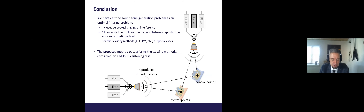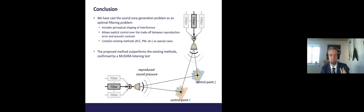In conclusion, we have cast the sound zone generation problem as an optimal filtering problem and included perceptual shaping of interference. The variable span linear filters give explicit control over the trade-off between reproduction error and acoustic contrast. Unlike speech enhancement, here you have the signal statistics available so you can actually compute the trade-offs. The framework contains existing methods — ACC, PM, and combinations — as special cases. The proposed method outperforms existing methods, confirmed in MUSHRA listening tests.